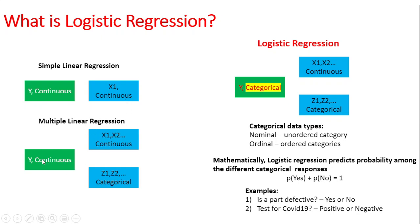In the case of logistic regression, the difference is your response variable y is a categorical variable and it can be based on both continuous predictors as well as categorical predictors. When it comes to categorical predictors, they can be of two types: nominal which is unordered category and ordinal which is ordered categories.